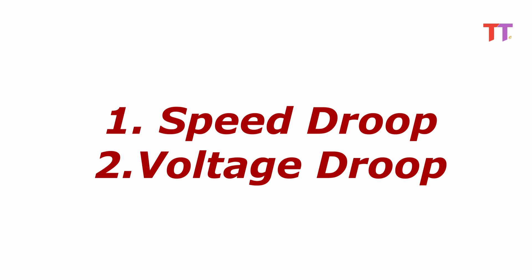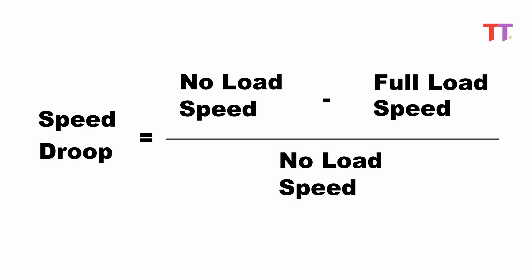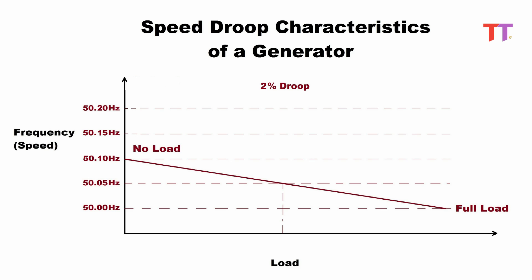There are different types of droops — first, speed droop, and second, voltage droop. We will discuss speed droop setting in the governor of the generator. The formula for droop is: no load speed (or frequency) minus full load speed, upon no load speed. This is the speed droop characteristic of a generator.